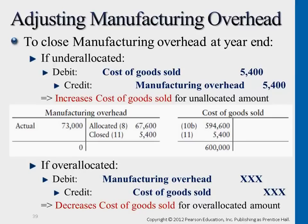This is a year-end adjusting entry. Remember, in financial accounting you also learn many different inventory adjusting entries — inventory shrinkage, for example: if there's missing inventory, how do we adjust it? Usually, we also adjust it through cost of goods sold. The same theory applies here on the manufacturing side: if we have under-allocation or over-allocation, we also adjust cost of goods sold at year-end.